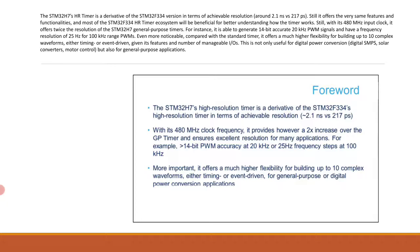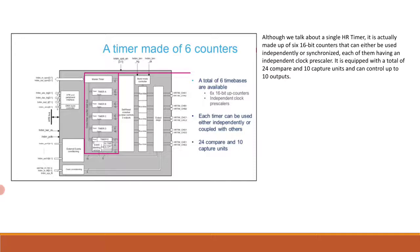This is not only useful for digital power conversion — SMPS, solar converters, motor control — but also for general purpose applications. Although we talk about a single HR timer, it is actually made up of 16-bit counters that can either be independently or synchronized, each with an independent clock prescaler. It is equipped with a total of 24 compare and 10 capture units, and can control up to 10 outputs.